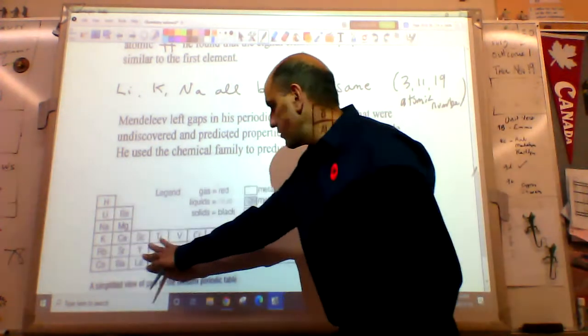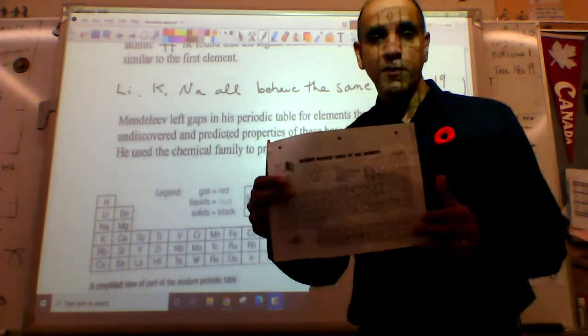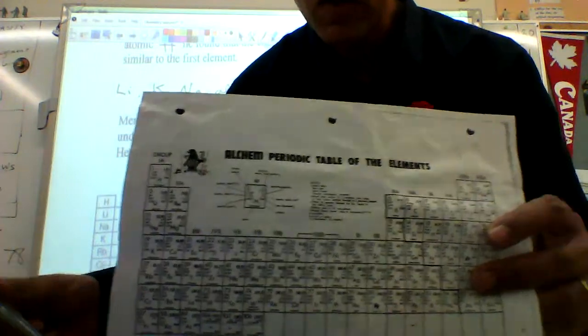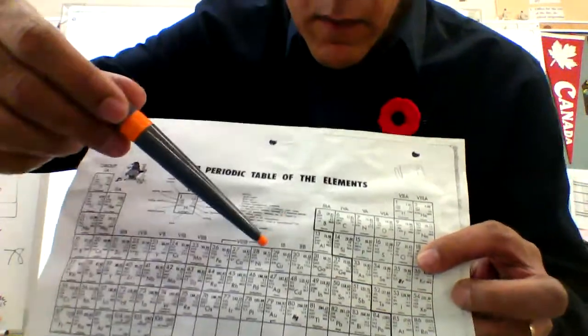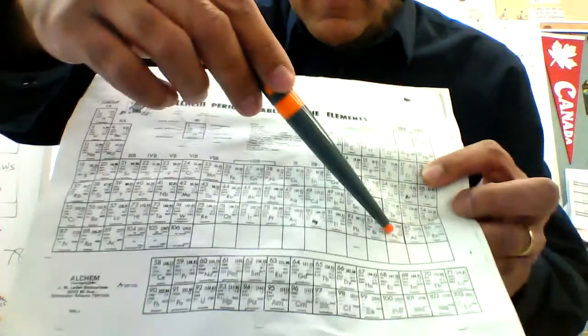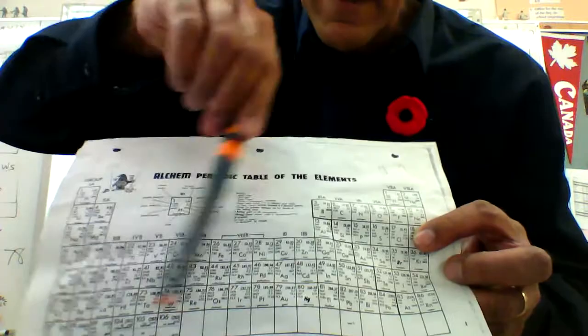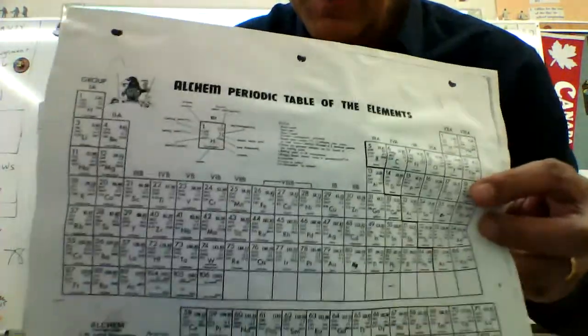Mendeleev did not have all the information when he created his table, so he left blanks for them. As people discovered elements, they slot them in. But he didn't just leave blanks - he also predicted how many protons, neutrons, electrons it would have, what form it would be in, and where you would likely find it. It's a great model and prediction. These are all metals on this side, these are non-metals, lying in the staircase are metalloids.